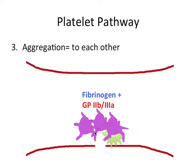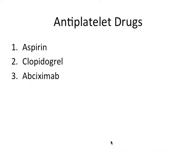The end result of primary hemostasis and the platelet pathway is a platelet plug composed of many many platelets and fibrinogen, tethered to the endothelium via von Willebrand factor. And that's pretty much it for the pathway.